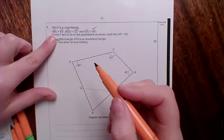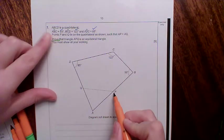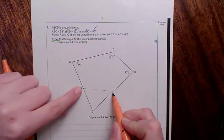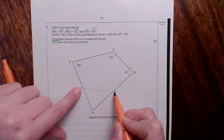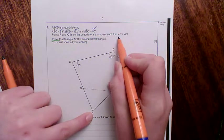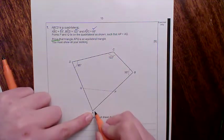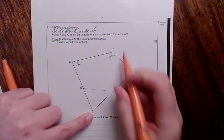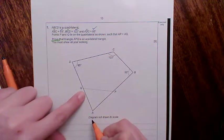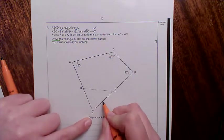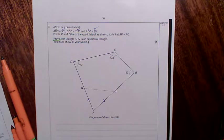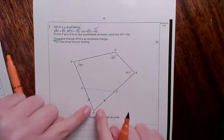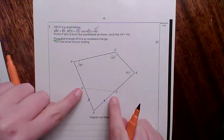Points P and Q. Well, where's P and Q? Points P and Q lie on the quadrilateral, as shown, such that AP, and because there's only two letters there, that's a line. So AP is equal to AQ. Now, that may have been shown on this as having a dash on each of those sides. If you see a dash, that means that they are equal.